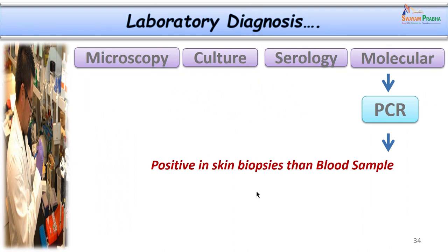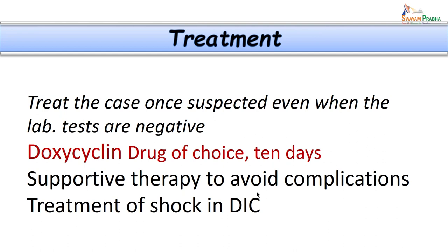Molecular tests such as PCR are also available for diagnosing rickettsial fevers. In summary, we have discussed microscopy, culture methods, serological tests and molecular methods available for diagnosis. A high index of suspicion is important; once rickettsial fever is suspected, immediate treatment is essential given the high case fatality rates. The drug of choice, especially in Rocky Mountain spotted fever, is doxycycline, given for a prolonged period of up to 10 days or longer. Supportive therapy — especially treating DIC and reversal of circulatory failure — is also very important.